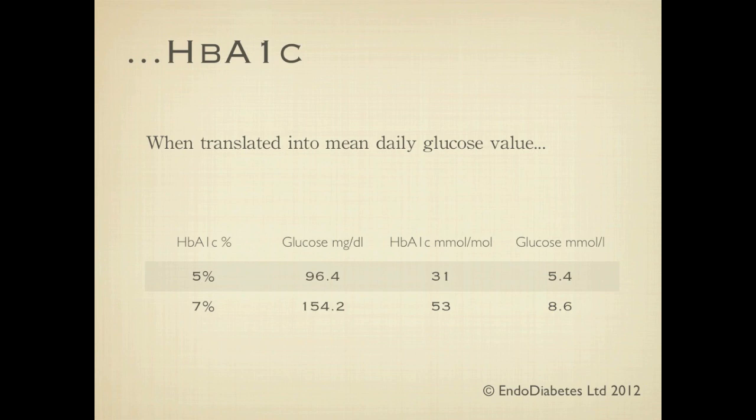An HbA1c of 10% reflects glucose control that needs to be improved. This equates to a mean daily glucose of 240.8 milligrams per deciliter, or 13.4 millimoles per liter. The method used to produce these figures has its critics, as the margin of error is higher than one would ideally like, but it gives some insight into what HbA1c means in terms of mean daily glucose.